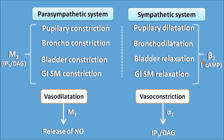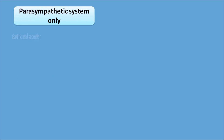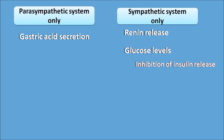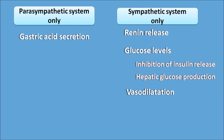The sympathetic system produces dilation in most tissues but constriction in vascular smooth muscle through alpha-1 receptors. The parasympathetic system uniquely acts on gastric acid secretion, while the sympathetic system acts on renin release and glucose regulation — increasing glucose levels by inhibiting insulin release and promoting hepatic glucose production. Therefore, the correct answer is that parasympathetic stimulation produces gastric acid secretion.